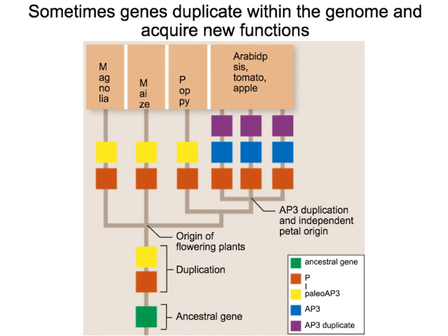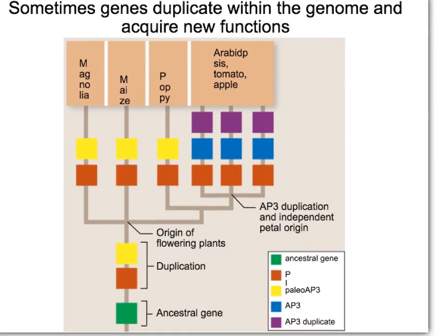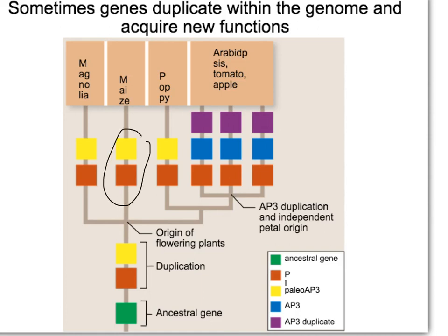The last mechanism we'll cover is gene duplication, where duplicated genes can acquire new functions. This happened during flower development. At the origin of flowering plants, the genes that regulate flower form duplicated — specifically, there was a duplication event of the AP3 gene. As a result, flowers that have that duplication have additional petal rings: the ancestral flower had just a few layers of petals, while plants with the duplicated gene form new rings of petals. This shows how gene duplication can result in increased complexity and the appearance of new morphologies.